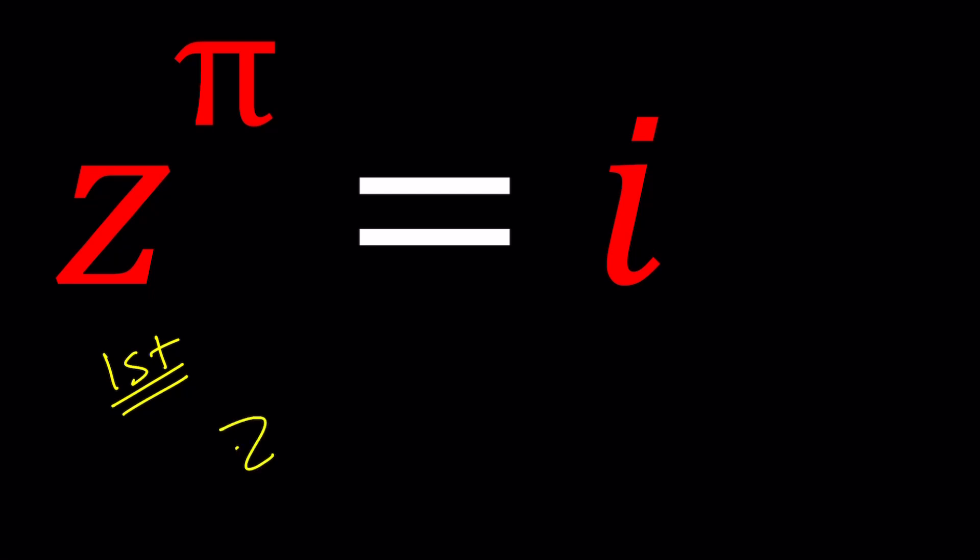So here's what I'm going to do. I'm going to leave the z to the π alone because that looks really weird. But I'm going to go ahead and replace i with something. What can I do for i? Well, I can write i as e to the power i times π over 2, right?